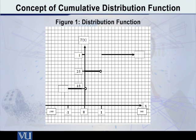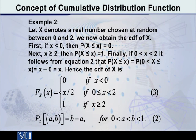I have done this for a discrete random variable and now we are talking about a continuous random variable. In this case, the step function will not be there; it will move in a continuous manner. So if I give you an example that will make the point clear, suppose that x denotes a real number chosen at random between 0 and 2.